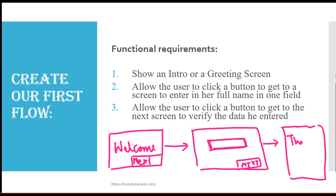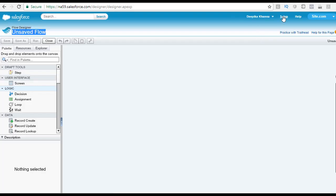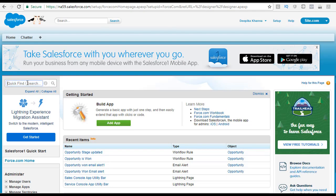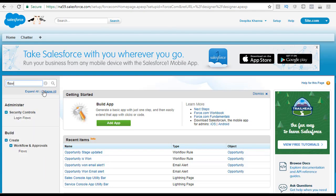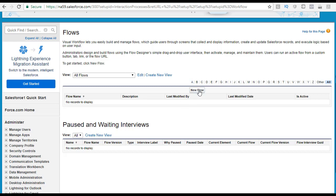So let's go ahead and create this flow using our cloud flow designer. Let's go back to our developer console. We are going to go to our developer account. Go to the setup, and then in your search box, type in flow, and then click on the flows link.